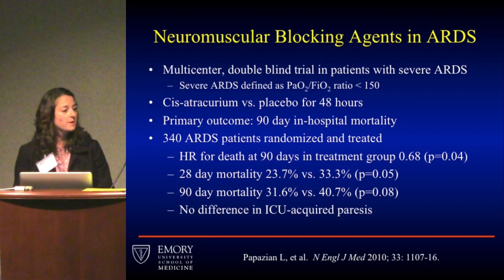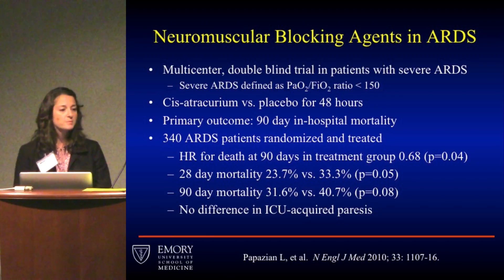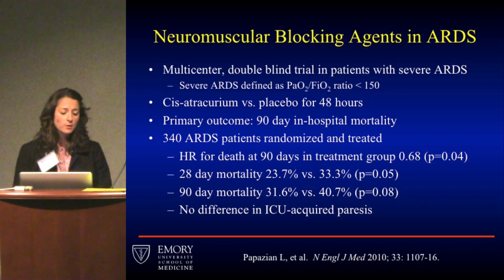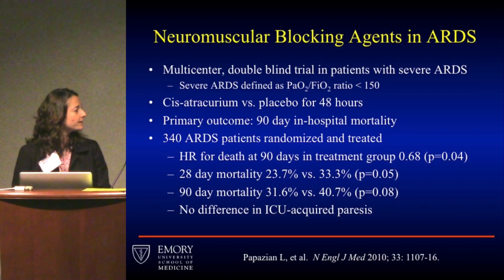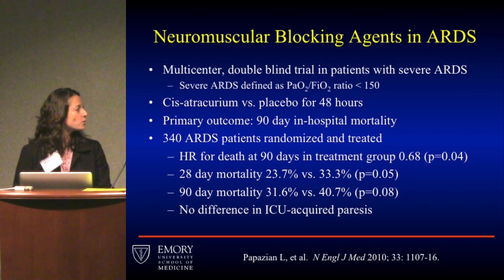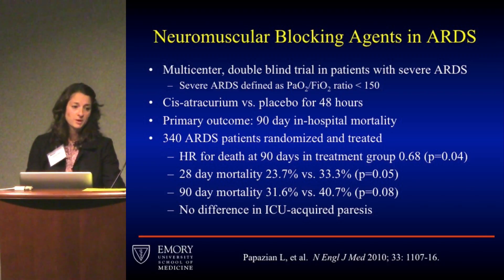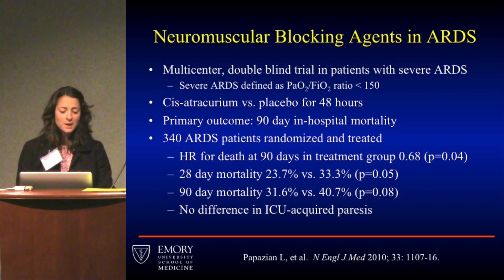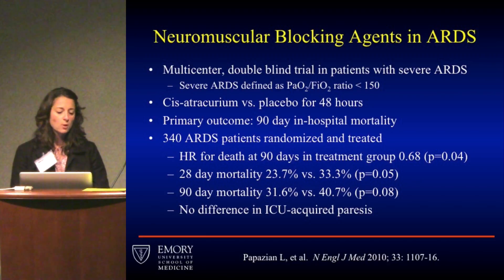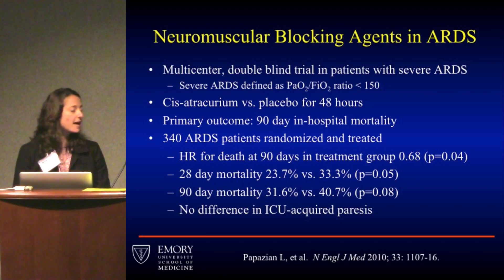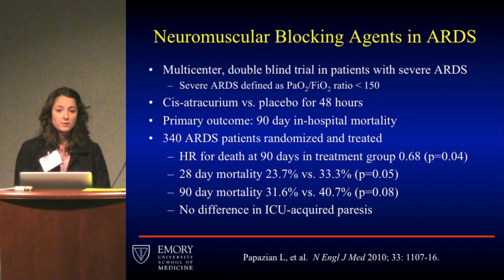Neuromuscular blocking agents in ARDS may be beneficial. A 2010 randomized controlled trial in severe ARDS (PF ratio <150) randomized patients to cisatracurium versus placebo for 48 hours with 90-day in-hospital mortality as the primary outcome. The 90-day crude mortality showed no significant difference, but when adjusted, there was a benefit — hazard ratio for death at 90 days was 0.68 in the treatment group. Before a firm recommendation can be made, these data need to be replicated, but the study showed it is safe and can be utilized in patients with severe ARDS.